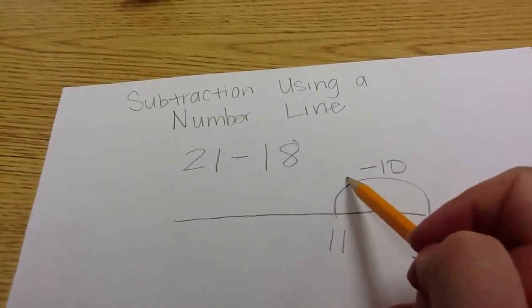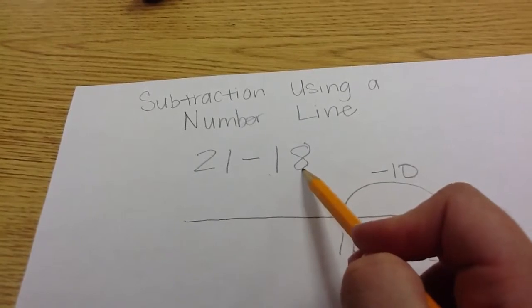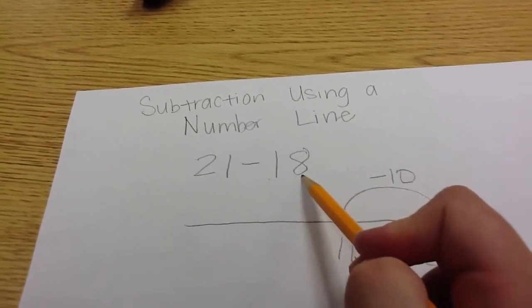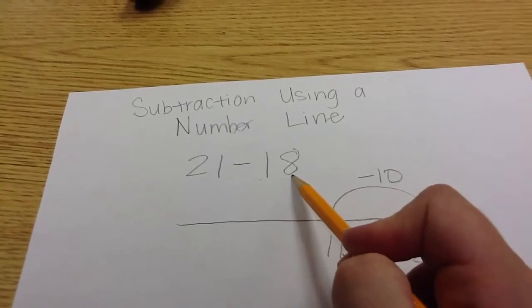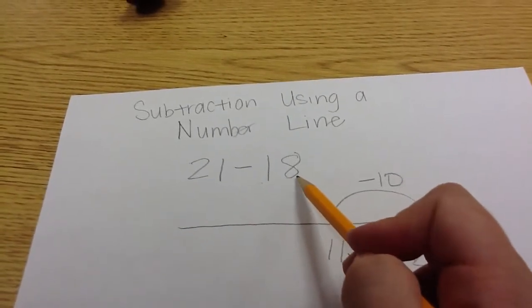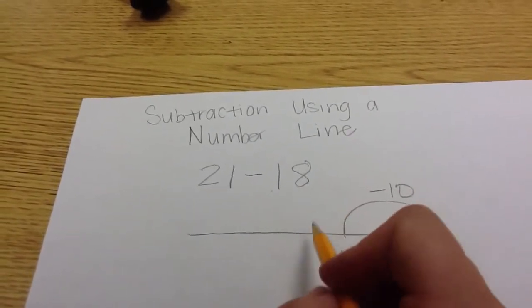Now, let's look at our ones place. Do I have any ones? Yes, I have eight ones. I can jump the number line multiple ways. This time, I'm going to count by ones.